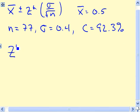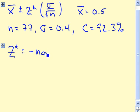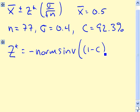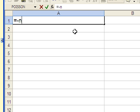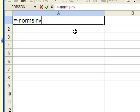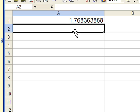Remember, the formula connecting the two is just z* equals minus normsinv of (1-C)/2. So let's go ahead and find out what z* actually is in this case. If we bring up Excel, be careful with the parentheses. Remember it's 1 minus C, but convert it to decimal form, so 0.923 in this case. We want parentheses around that because we want to divide all of that by two, not just the 0.923 part. And we get about 1.768.